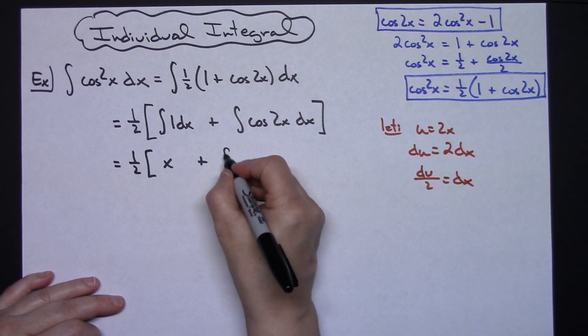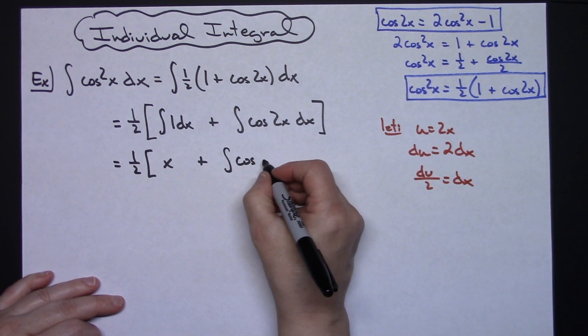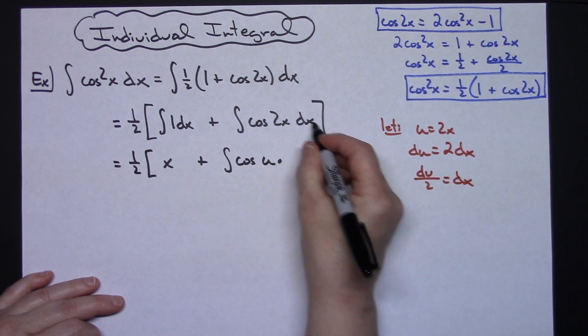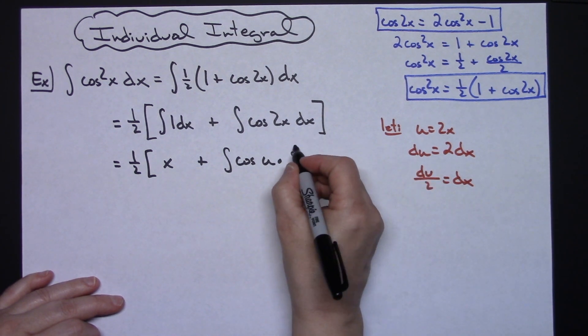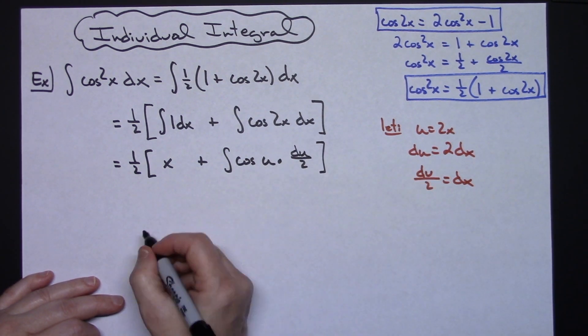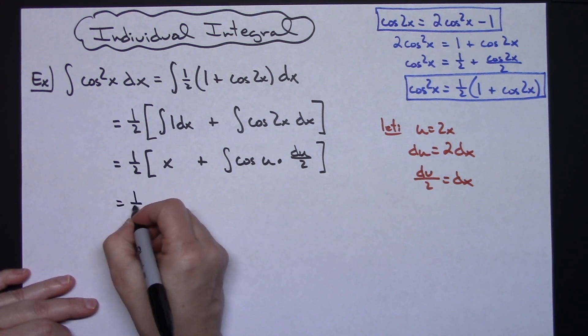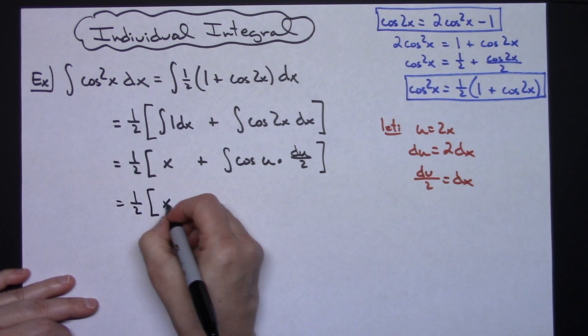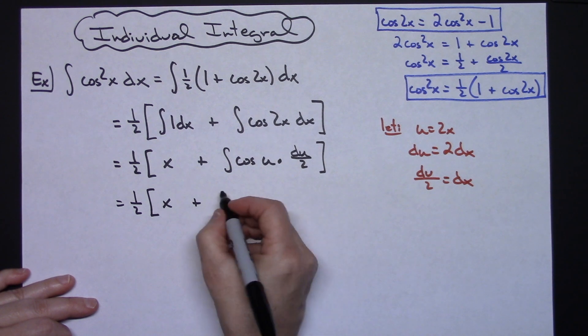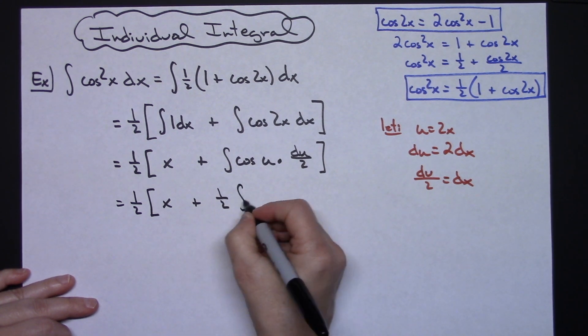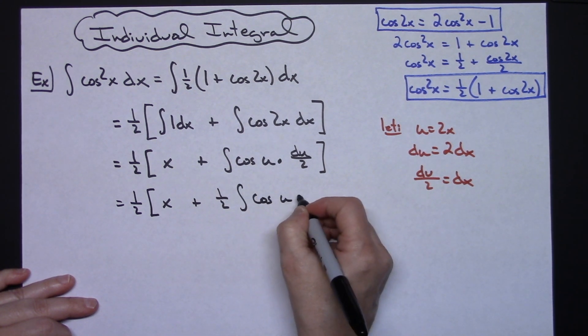So we'll have the integral of cosine u times, replacing dx with what it is, du over 2. Pulling that 1 half out there, I'll have this 1 half that sits here. x plus, pulling out this 1 half, I'll have 1 half times the integral cosine u du.